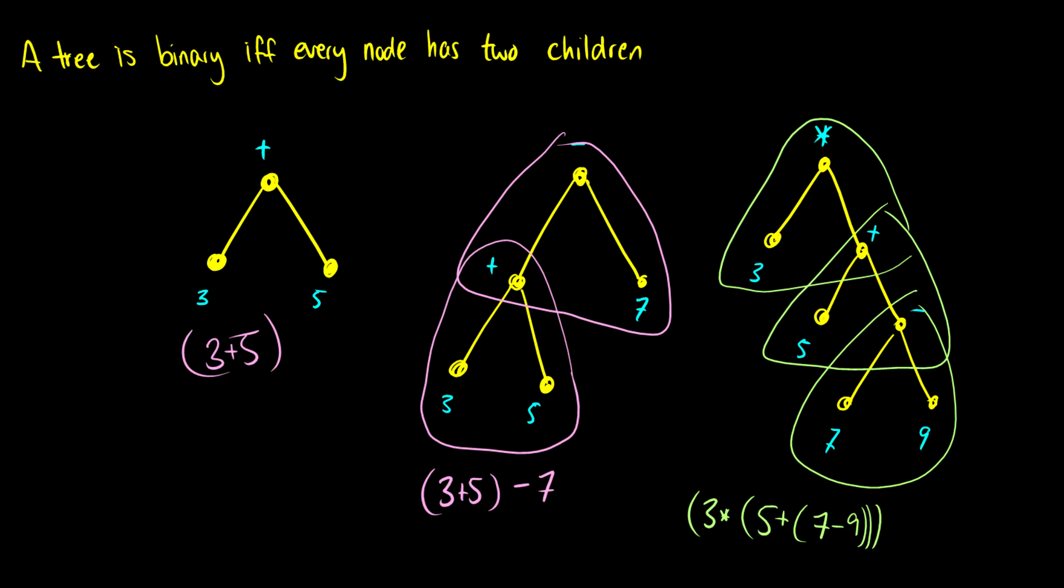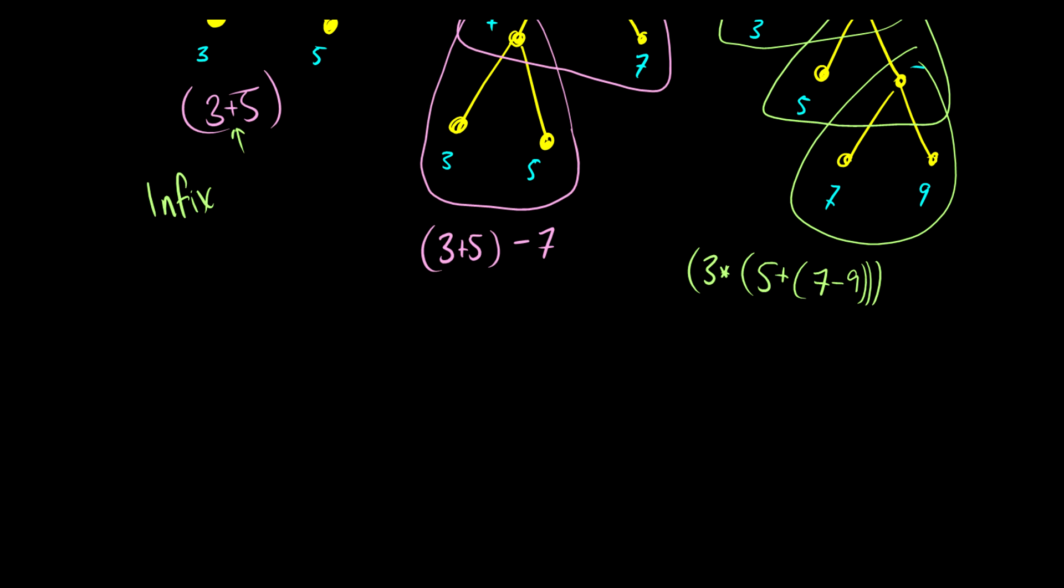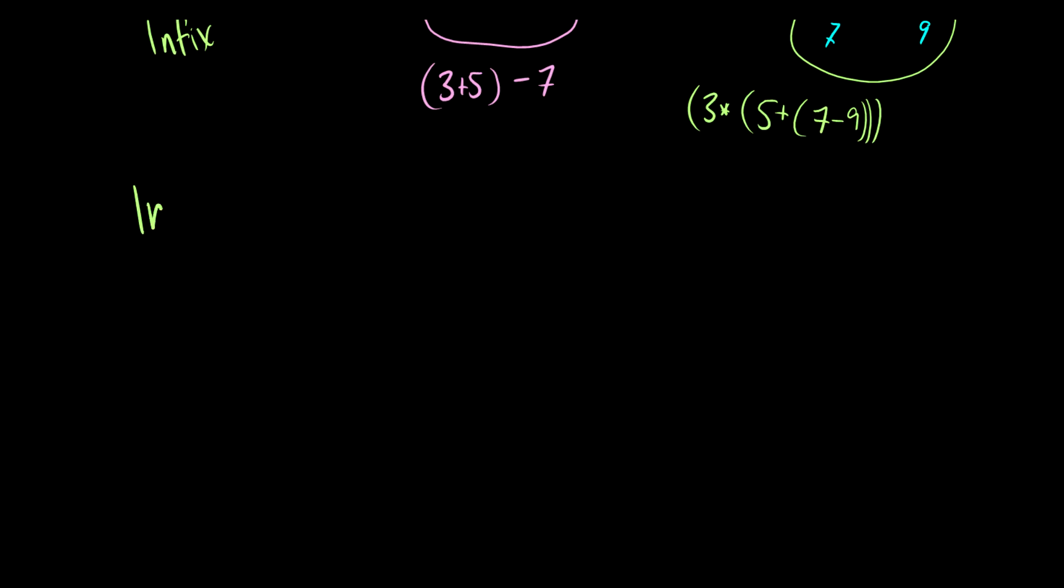The way I wrote them is called infix notation. In infix notation, we use our operator in the middle. There are three ways we can write expressions: infix, prefix, and postfix. With infix, we have something like 3 plus 5. In prefix, we'd have plus 3, 5. I should put commas to separate this to make it more readable. With postfix, we would have 3, 5, plus. It's just where the operator goes - before, after, or in between.